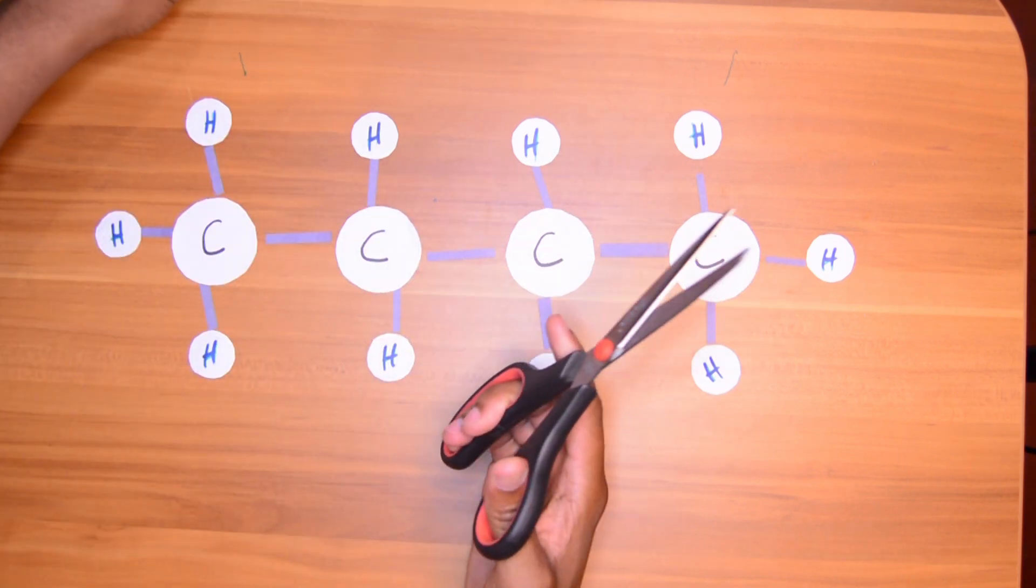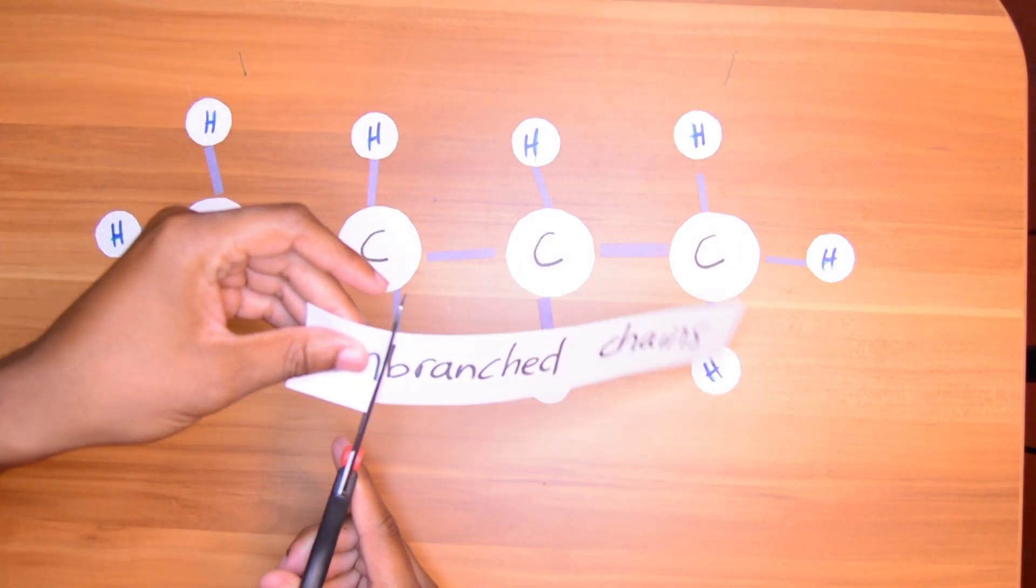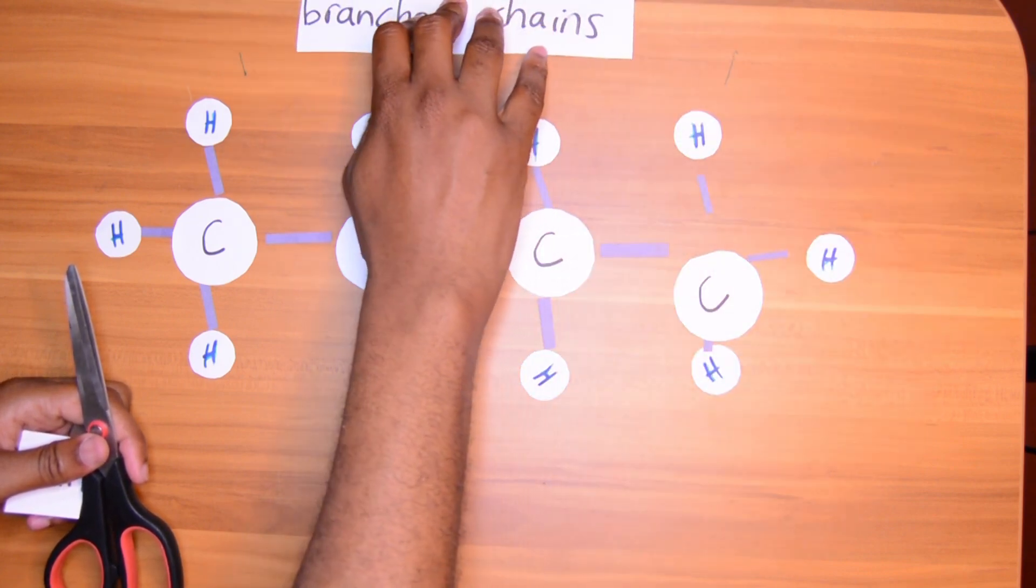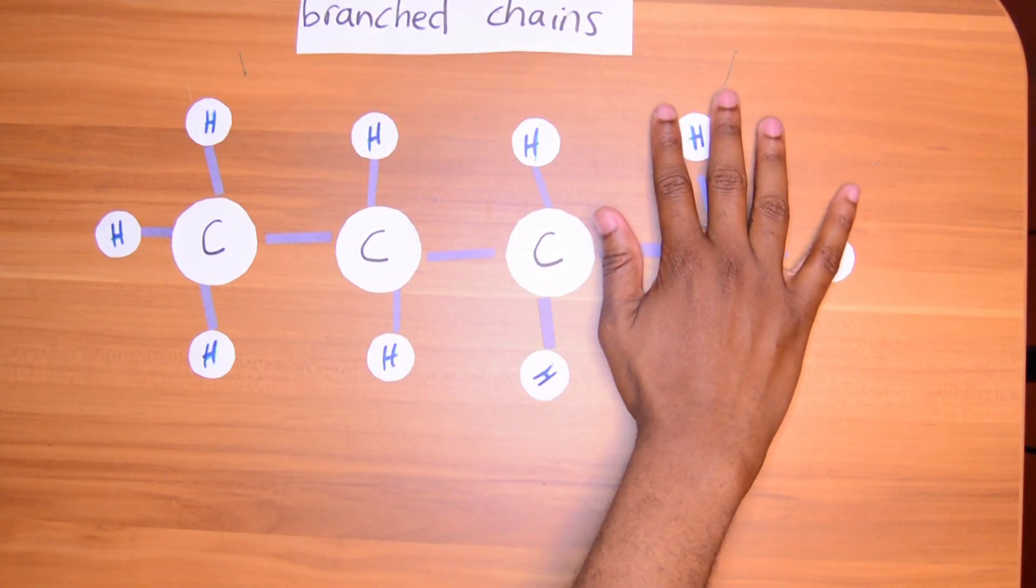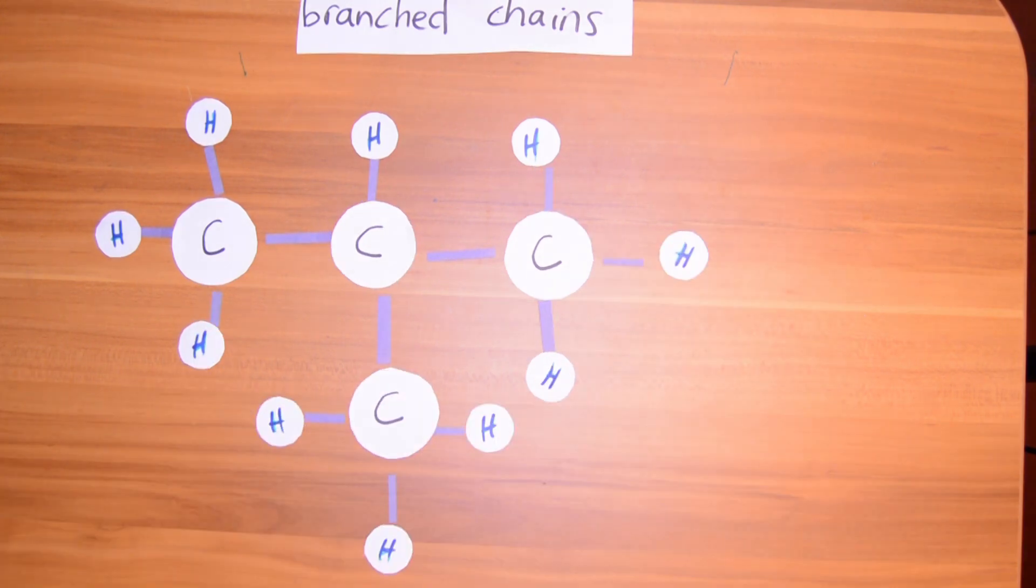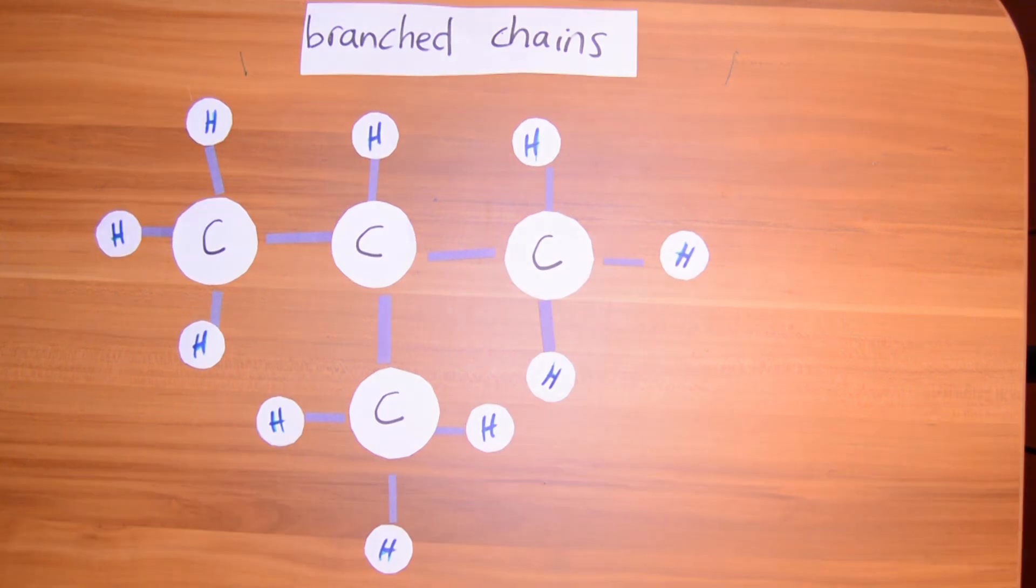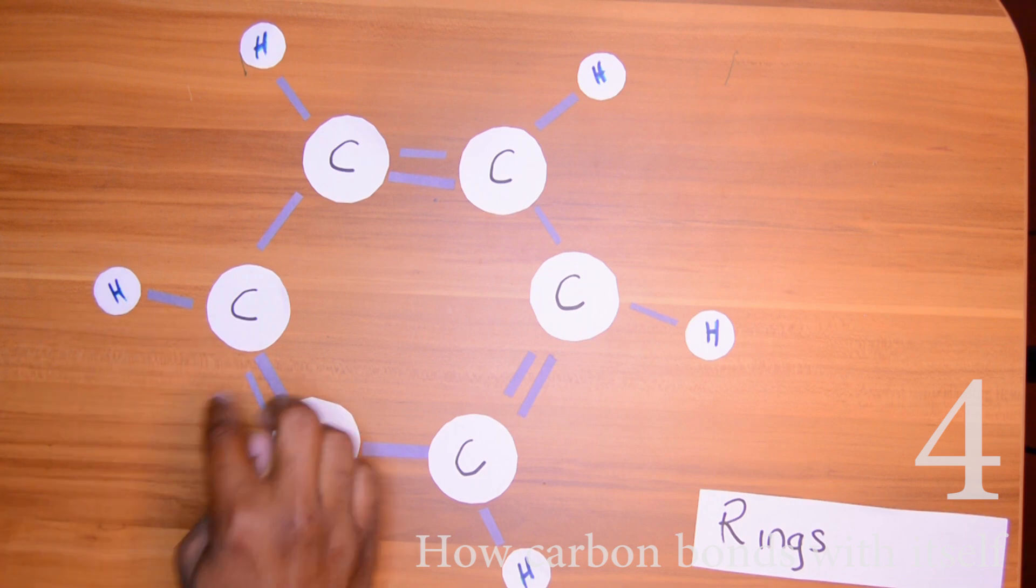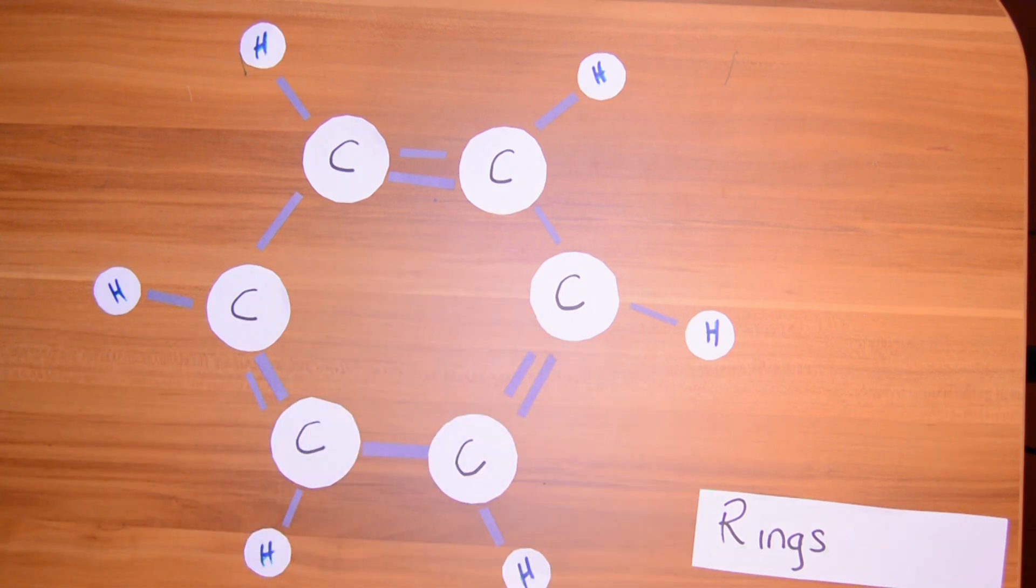Or we can have branched chains that look like this. Carbon can even go really crazy and have stuff like rings. And the rings can be single bond or form double bonds between adjacent carbon atoms.